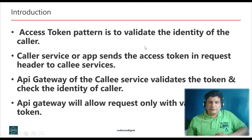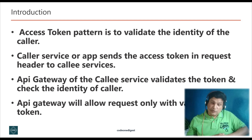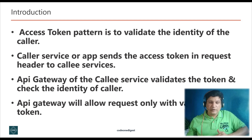Now let's start with the access token design pattern for microservices. The access token pattern is used to validate the identity of a caller. The caller service or application sends an access token in the request header to the calling service. The API gateway of the calling service validates the token and checks the identity of the caller, and will allow the request only if the access token is valid.